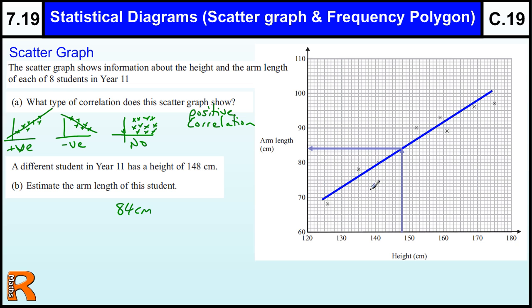This will give us an estimate of what, if this is a good correlation, they should roughly have an arm length of 84cm. Obviously it depends on the line you've drawn, but most lines you draw through this data will give you something around that value. It's very important that you actually draw your lines on there so people can see what you've done. The line of best fit is very important to draw on it. That's the essential parts of scatter graphs.